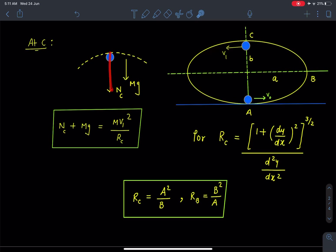The normal reaction by the track and the weight mg, and here let's say speed of this particle at this instant is V₁.